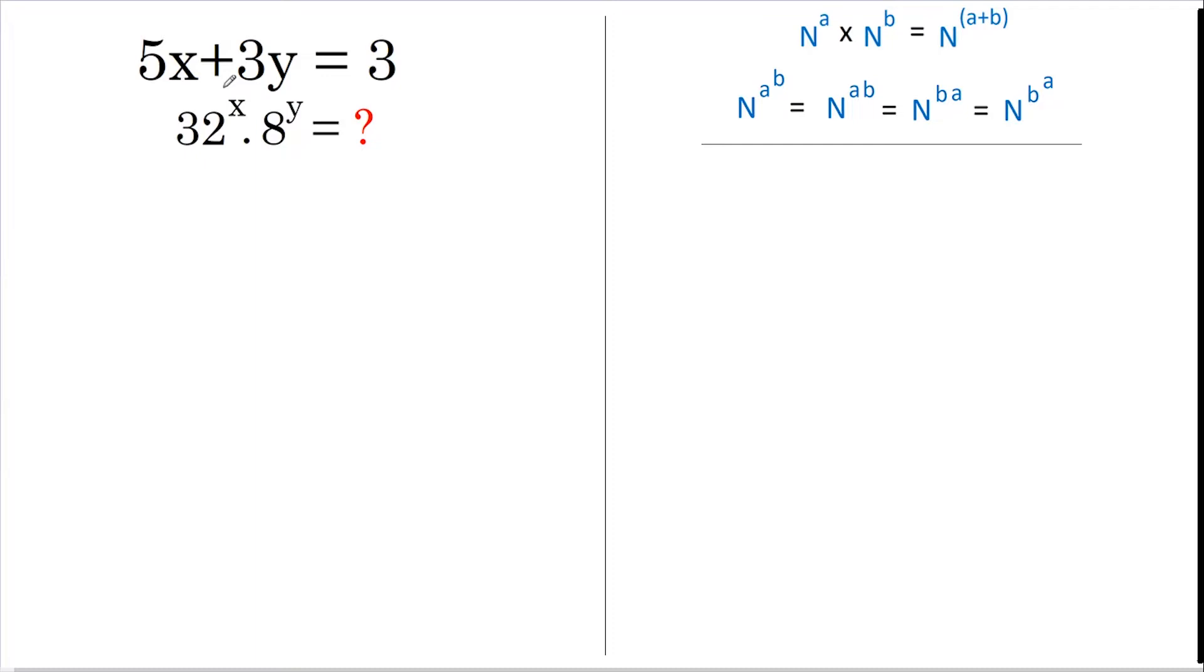I'm going to assume that 5x plus 3y and 3 are both powers of 2. Therefore I can write this as 2 to the power of 5x plus 3y equals 2 to the power of 3. If the bases are equal, they're both 2, then the powers must be equal, and that's what we've been given up here.